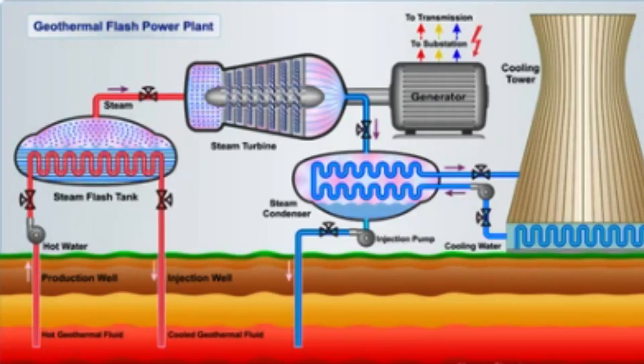What are the main advantages and disadvantages of geothermal energy as a renewable energy source? Geothermal energy is a renewable energy source that derives power from heat generated within the Earth's crust. This energy is harnessed through geothermal power plants, which extract heat from underground reservoirs of hot water or steam and convert it into electricity. While geothermal energy has several advantages as a renewable energy source, it also has some notable disadvantages that must be taken into account.